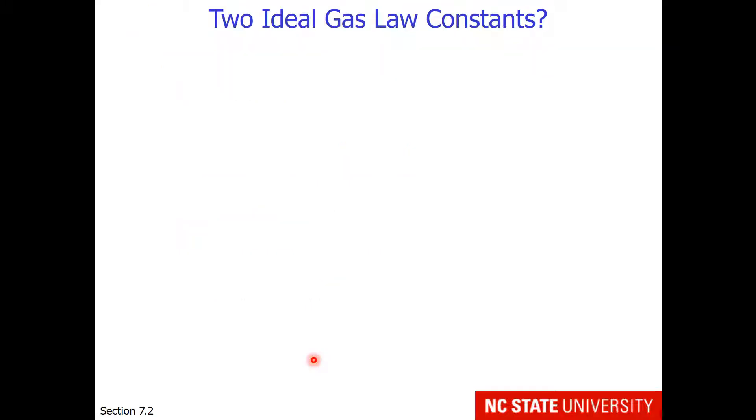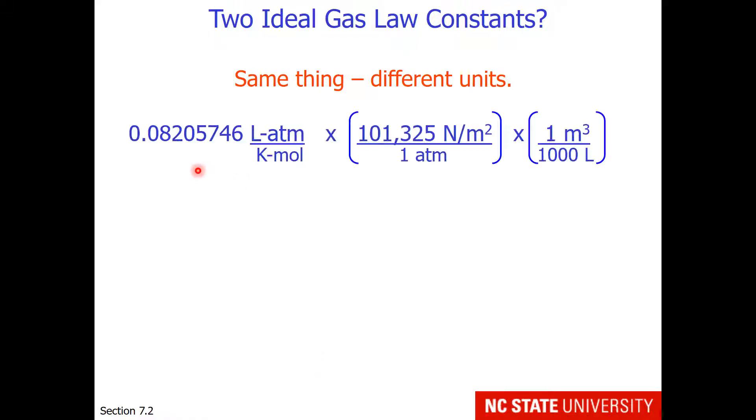Now those of you who've been alert are thinking to yourself, wait a minute, I saw R earlier in this chapter and it was 0.0821 atmosphere liter per Kelvin mole. Why are there two ideal gas law constants? There aren't. It's just a matter of what units are attached to the numeric value. If I take the PV equal NRT gas law constant, which is in liter atmospheres per Kelvin mole, and I use this conversion factor of 101,325 newtons per meter squared in one atmosphere, and also adjust for the fact that there are 1,000 liters in one cubic meter,